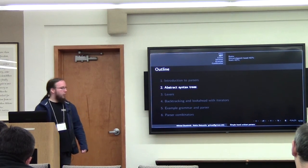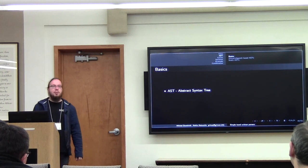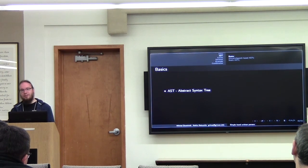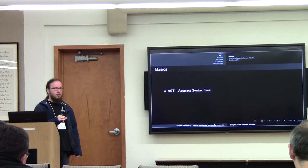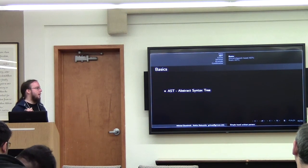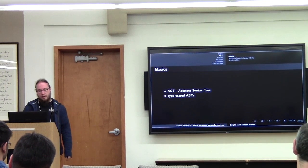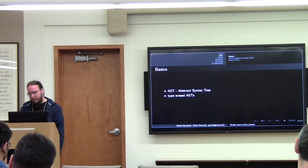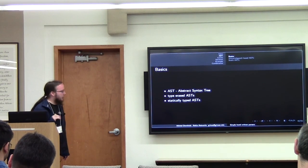Let's go on to some ways to define abstract syntax trees. An abstract syntax tree is a data structure that is tree-like and is used to store the result of the parsing. Every node usually corresponds to a production rule and contains all the tokens necessary to later do something with the language we've parsed. There are a few approaches. I think the two most frequent are type-erased ASTs and statically-typed ASTs — those are my names.